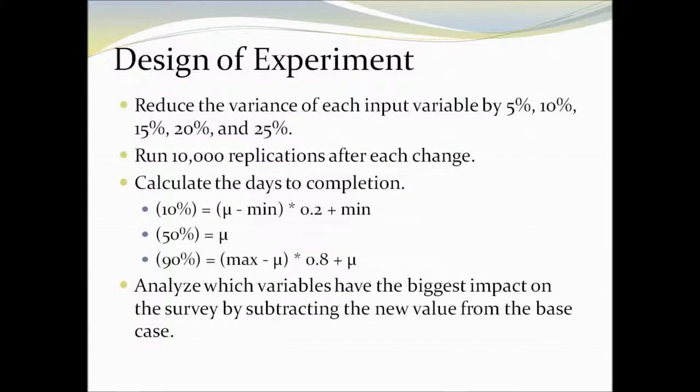For the design of experiment, we reduce the variance of the major factors from 5 to 25% in increments of 5% and run the simulation again for 10,000 replications. Then 10, 50, and 90% confidence intervals of the time to completion are calculated. Finally, to find the variables of the biggest impact, we subtract the new values from the original simulation values.